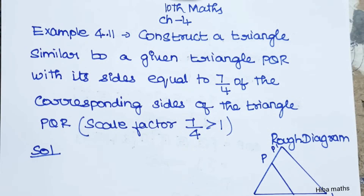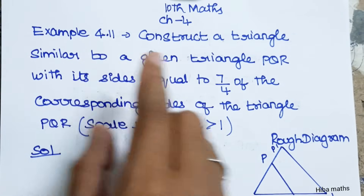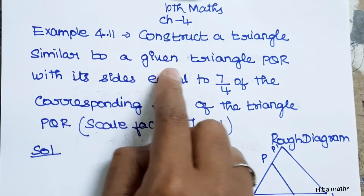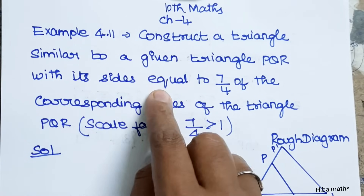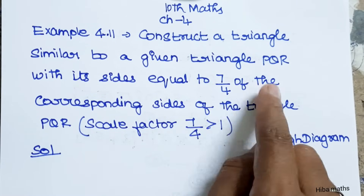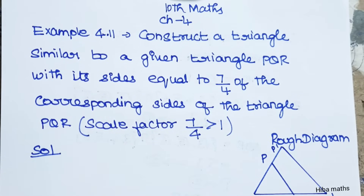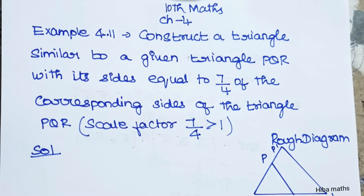Hello students, welcome to Hibamax 10 standard, Chapter 4, Example 4.11. Construct a triangle similar to a given triangle PQR with its sides equal to 7 by 4 of the corresponding sides of triangle PQR. The scale factor is 7 by 4, which is greater than 1.